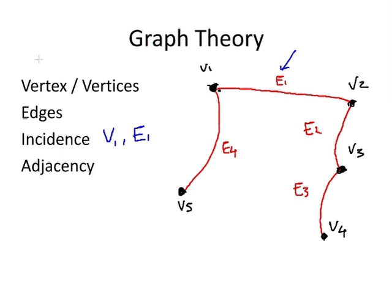Adjacency describes two vertices that are connected by an edge. We have quite a few examples here of adjacency. v1 and v5 are adjacent, v1 and v2 are adjacent, v2 and v3 are adjacent, v3 and v4 are adjacent.